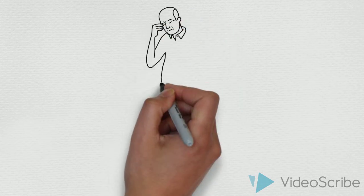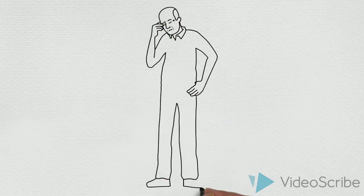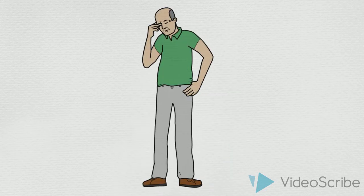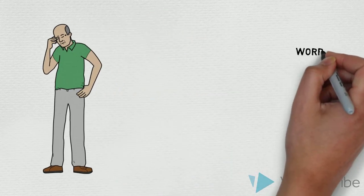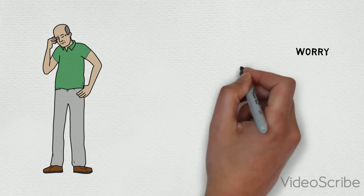The American Psychiatric Association defines anxiety as a negative mood state characterized by a set of behaviors such as fidgeting, physical tension, and worried facial expressions.